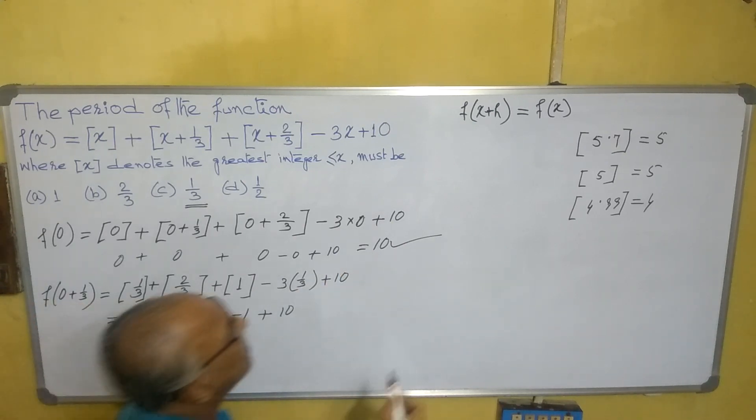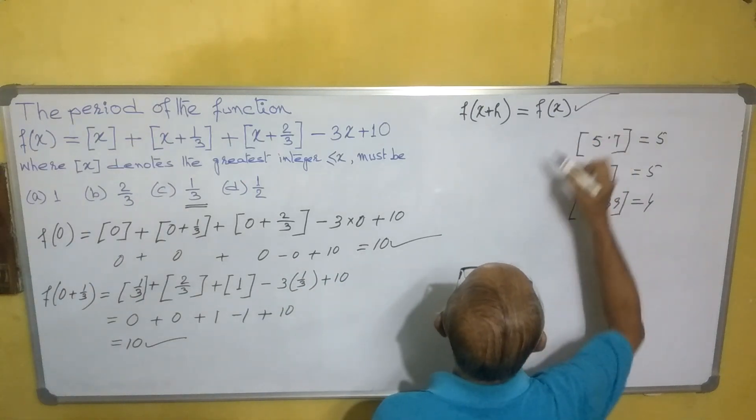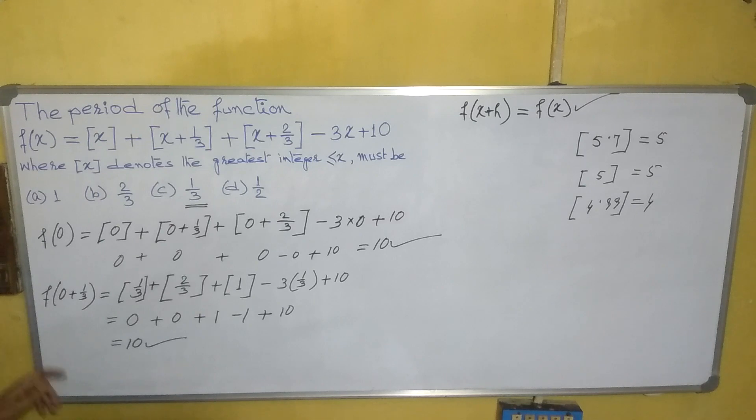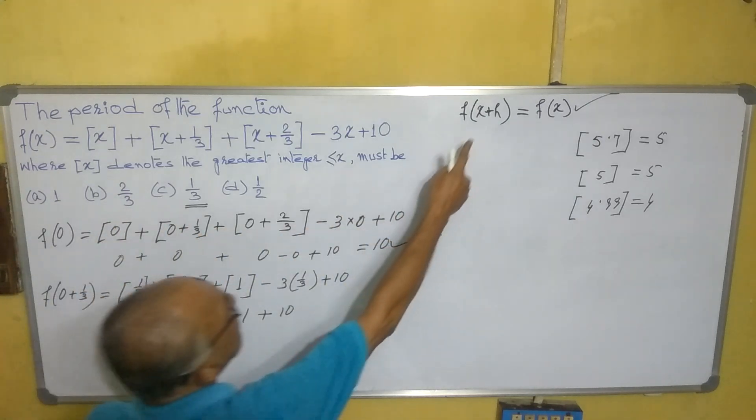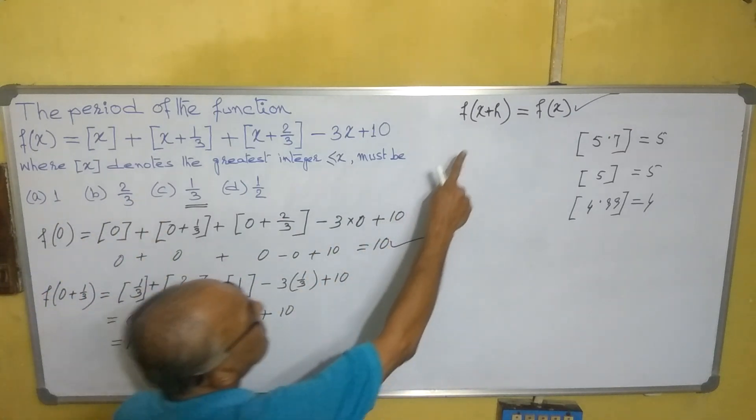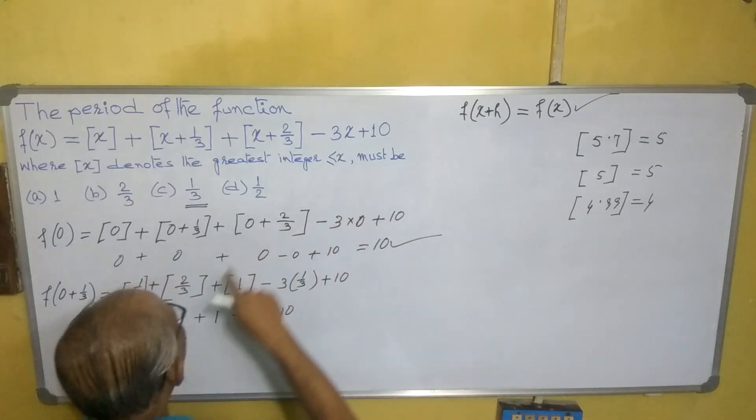That means it is satisfying this condition, and hence we will say 1/3 is the least supplied value. We need not be required to check the others. If it is true for h, it will be true for 2h also. That means for 2/3 also it will satisfy.